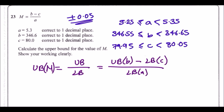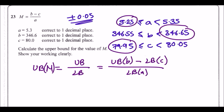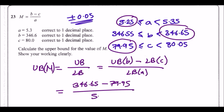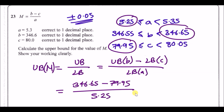Selecting the correct values: upper bound of b is 346.65, lower bound of c is 79.95, and lower bound of a is 5.25. So we calculate (346.65 − 79.95) / 5.25, giving an answer of exactly 50.8.